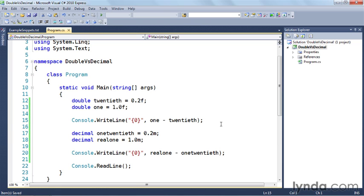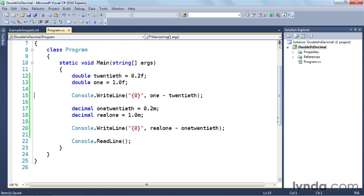So let's see how the double data type and decimal data type compare when doing the same kind of operation. Because down here, I've got two variables, decimals, which are 1 twentieth and the real one. So now I've got the same kind of calculation. I've got 1.0 subtracting off 0.2 each time.